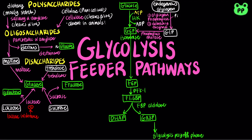Monosaccharides enter glycolysis through different intermediates. In muscles and kidney, fructose is phosphorylated by hexokinase into fructose-6-phosphate, which is an intermediate of glycolysis.